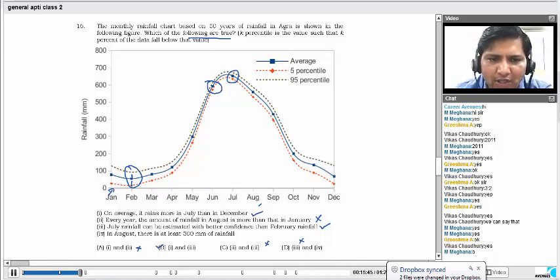In August, there is at least 500 mm of rainfall. In August, there is at least 500 mm. Yes, a few years may be more than 500. Maybe many years are more than 500, but in a one-off year, it could be very less. Just like what we discussed. So this cannot be the answer. The answer is options 1 and 3.